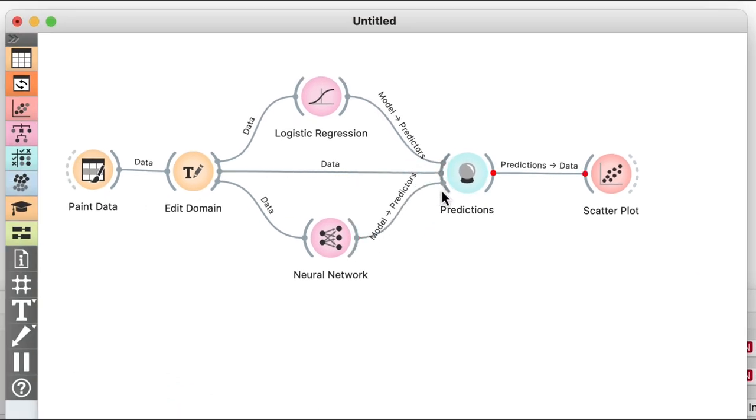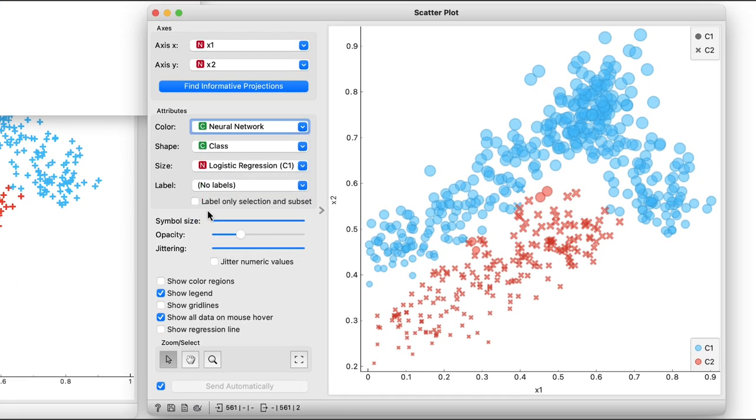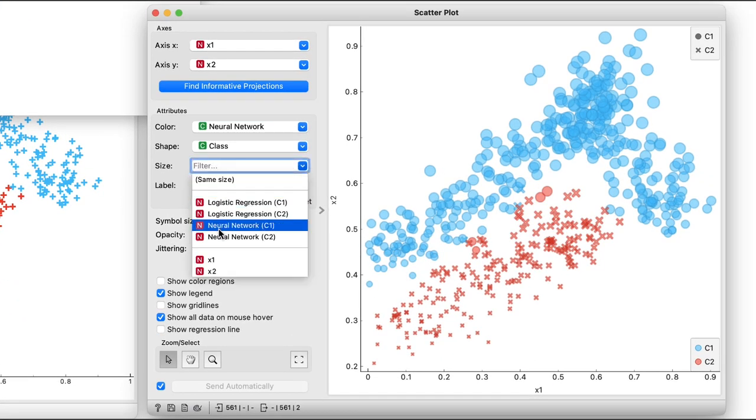So let's pass this newly created model to the predictions widget and change the scatterplot's color and size to show the results of our neural network.